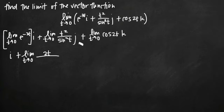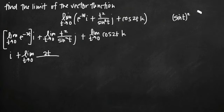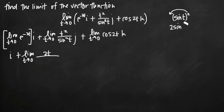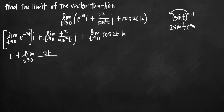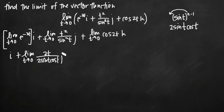To take the derivative of sine squared of t, we write it as the quantity sine of t, squared — which is the same thing. Then we use the chain rule: first apply the power rule, bringing the exponent out front to get 2 times sine of t, leaving the exponent at 1. Then multiply by the derivative of the inside function. The derivative of sine of t is cosine of t, so we get 2 sine of t cosine of t, and we multiply that by j.